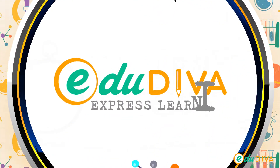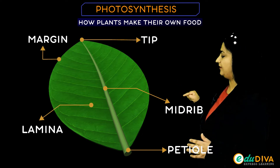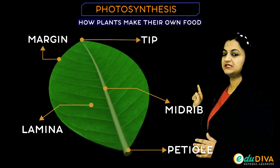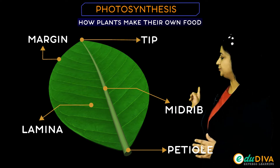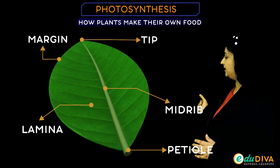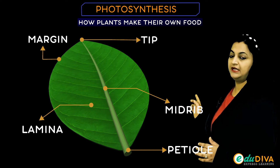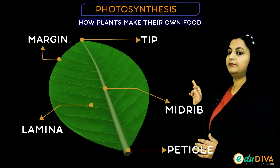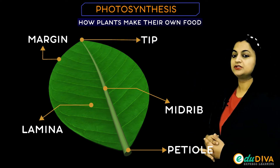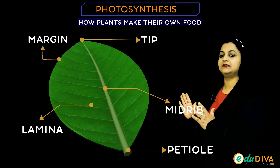We will look at the leaf. This flat portion of the leaf is called lamina. The center line is called mid-rib. From where the leaf extends, that portion is the petiole. The corners of the leaves are the margin, and the tip portion is the tip. The photosynthesis process occurs in this lamina.